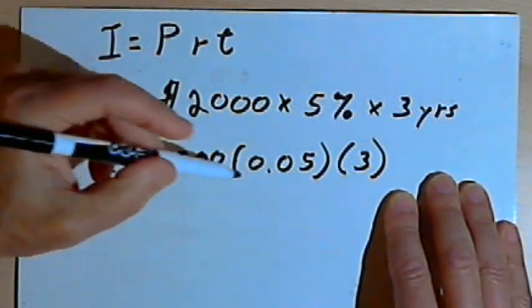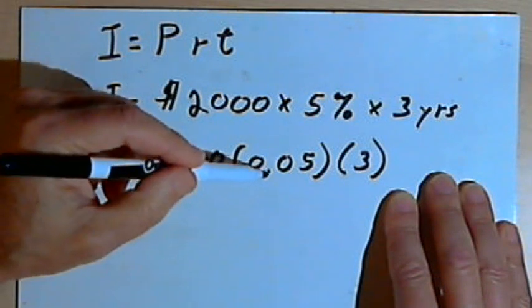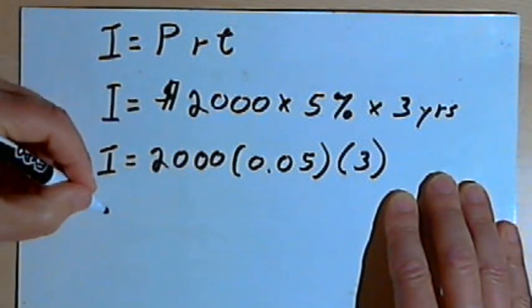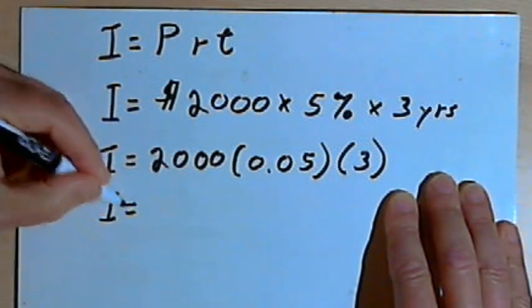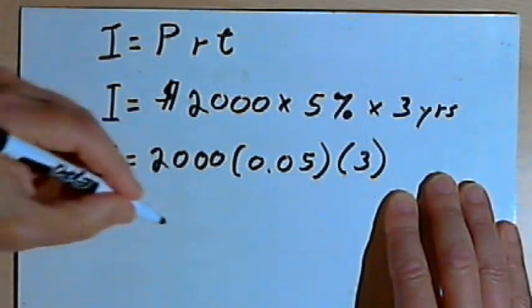And when we multiply this out, 2,000 times 0.05 times 3, what we're going to find is that the interest would be $300.